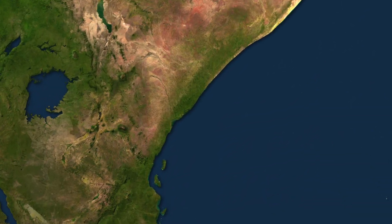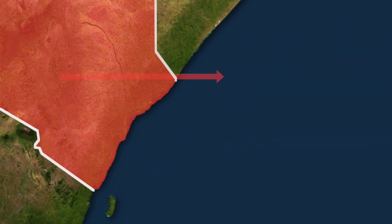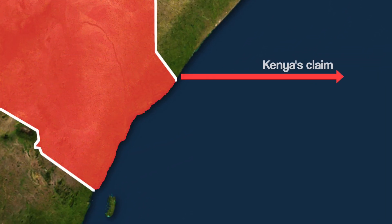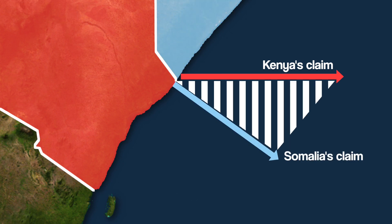Kenya claims the maritime boundary between the two countries should be in this direction, and Somalia thinks this direction would be better. To start with, let's find out what's at stake.